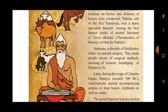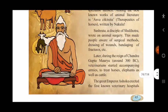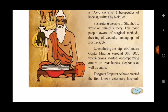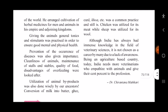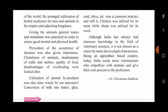Later, during the reign of Chandragupta Maurya around 300 BC, veterinarians started accompanying armies to treat horses, elephants, and cattle. The great Emperor Ashoka erected — meaning built — the first known veterinary hospital in the world. He also arranged cultivation of herbal medicines for men and animals in his empire and adjoining, that is neighboring, kingdoms.